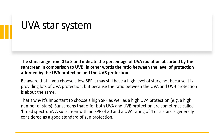The UVA star rating system is very simple. Star ratings range from 0 to 5 and indicate the percentage of UVA radiation absorbed by the sunscreen in comparison to UVB radiation — in other words, it is the ratio between the level of UVA protection versus UVB protection. Be aware: if you choose a low SPF, it may still have a high star rating, not because it provides lots of UVA protection, but because the ratio between UVA and UVB protection is about the same. That is why it is very important to choose both a high SPF and high UVA protection.